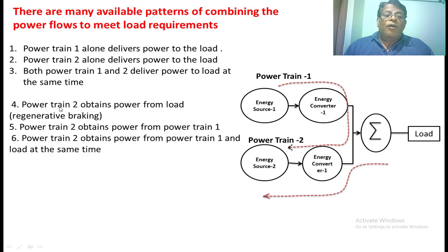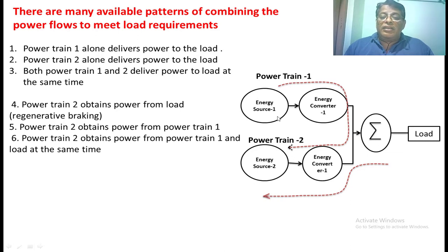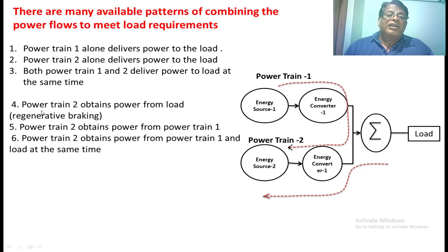In the fourth mode, power train 2 obtains power from the load. If we use only power train 1 — the IC engine — regenerative braking occurs, but that power cannot be given back to the IC engine. In this hybrid vehicle, however, the battery is present, so during regenerative braking the load gives power back to the source, and that energy can be stored in the battery. That comes under the fourth mode of operation.